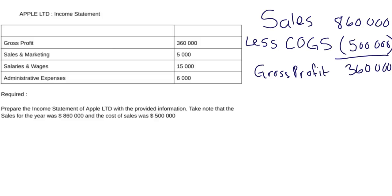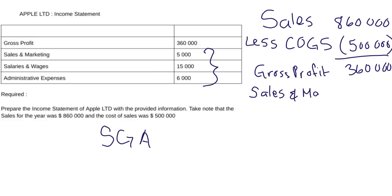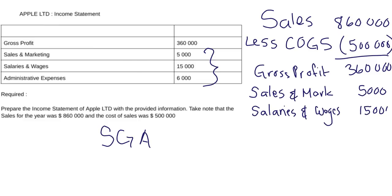Now to get your operating income, as soon as you get your gross profit you will always have to deduct your operating expenses. Normally we call it your SGA, which is your selling, general and administrative expenses. So you have your sales and marketing, which is five thousand, and then you have your salaries and wages, which is fifteen thousand, and then your administrative expenses, which is six thousand.